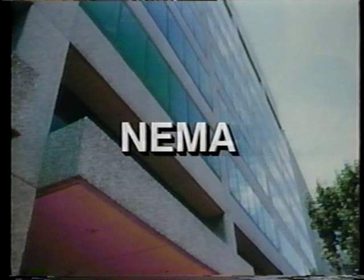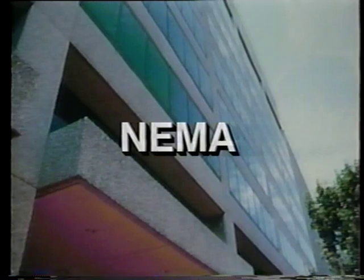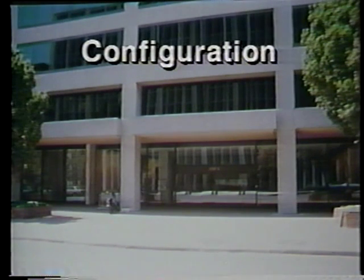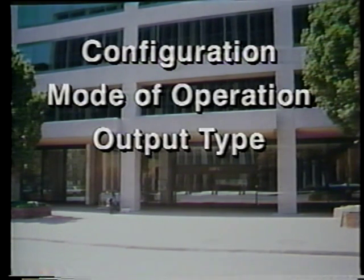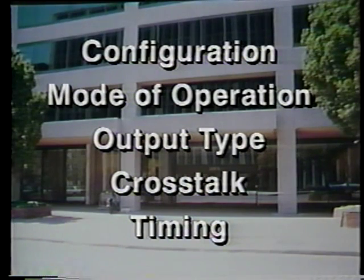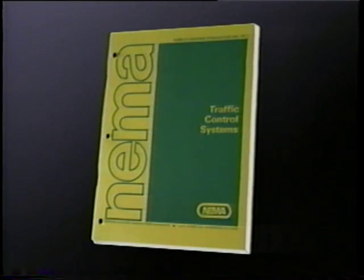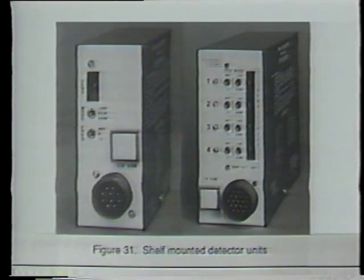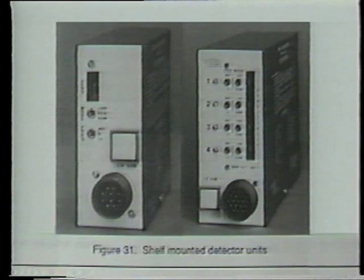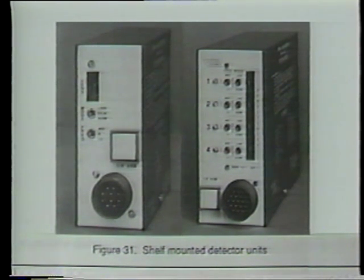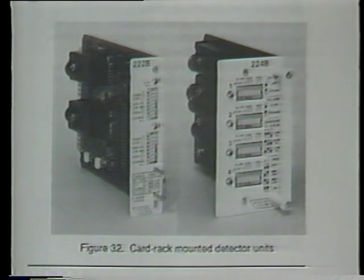For years, many manufacturers have developed and sold loop detector amplifiers in a variety of sizes, methods of connection, and designs. To overcome the interchangeability problems, NEMA — the National Electrical Manufacturers Association — developed a set of loop detector standards. Now all loop detector amplifiers must conform to these standards for configuration, mode of operation, output type, cross-talk, and timing. There are two detector unit configurations defined by NEMA: the first is the shelf-mounted detector unit, available in both single and multi-channel models.